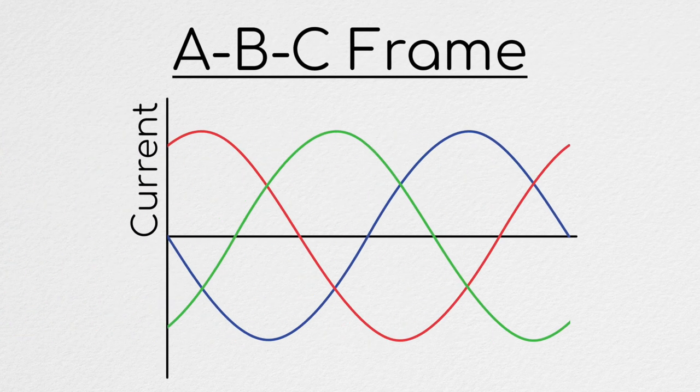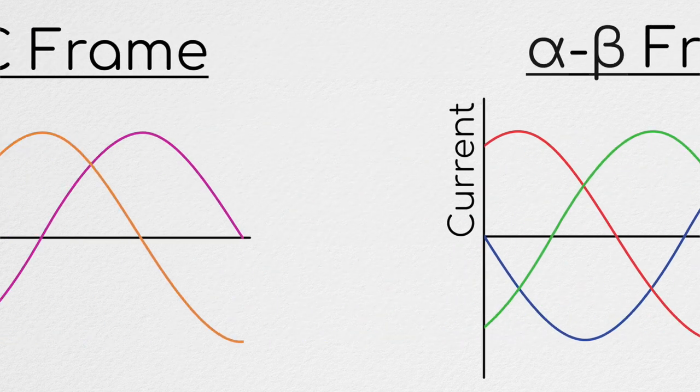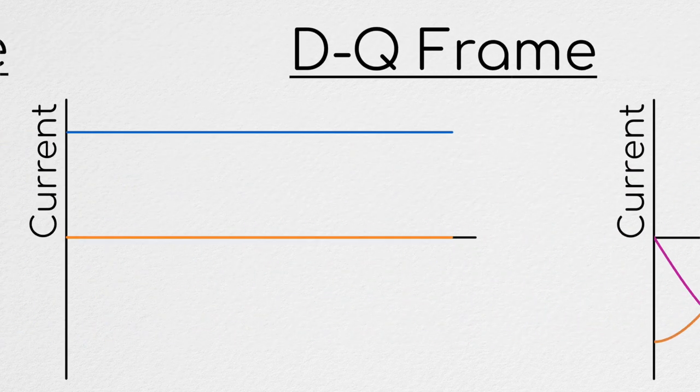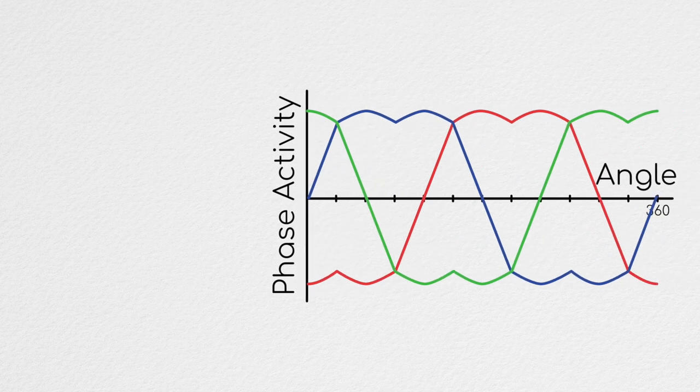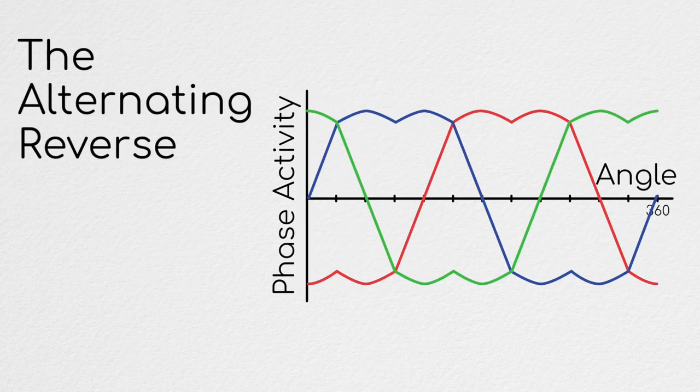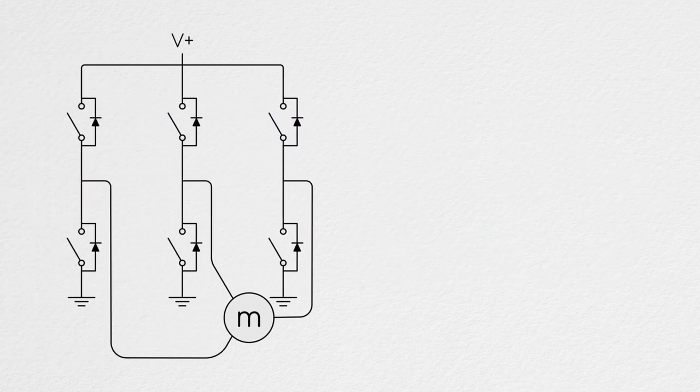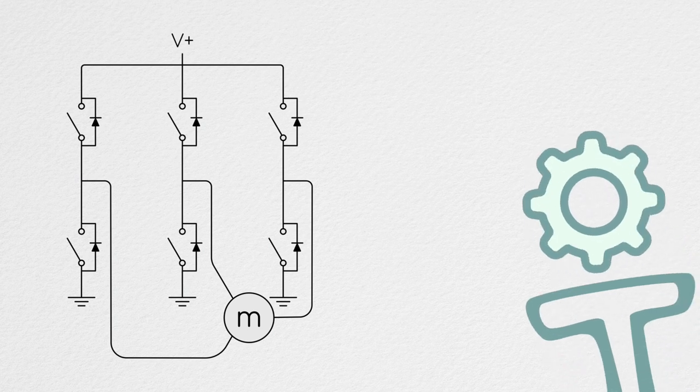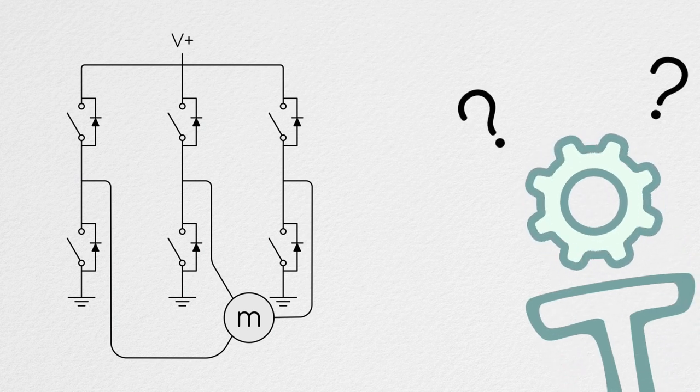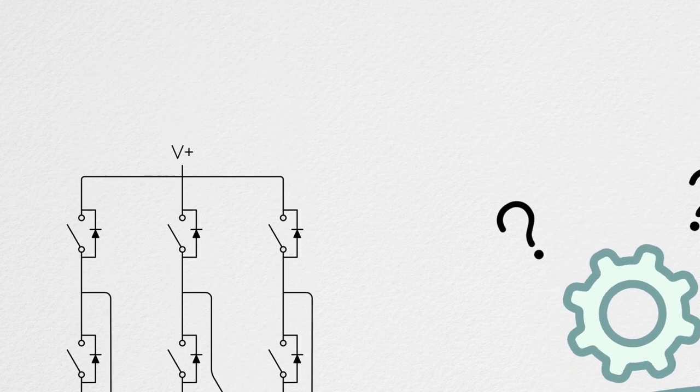Hi and welcome back to Understanding Motors. In the last several episodes, we've been working towards developing a method of producing smooth and optimized torque in a motor. Last episode, we finally arrived at this optimal modulation method, the Alternate Reverse Space Vector Modulation pattern. However, while we now know some information about it, we haven't yet talked about how to actually perform space vector modulation practically. By the end of this episode, we will have described how to use this information in the real world. So, let's get into it.